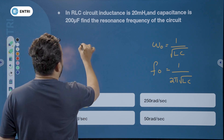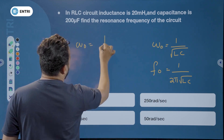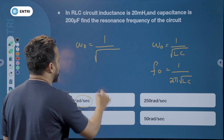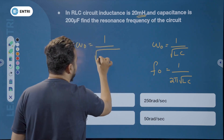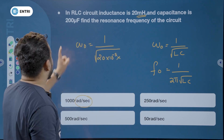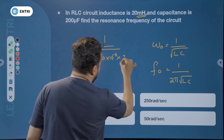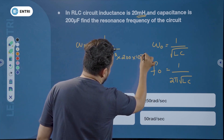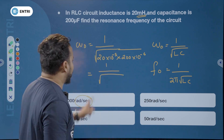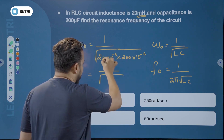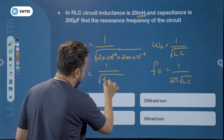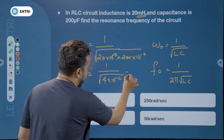We will get omega naught equal to 1 divided by root of L times C. Inductance is 20 milli henry, that is 20 into 10 raise to minus 3. Capacitance is 200 microfarad, that is 200 into 10 raise to minus 6. Simplifying the units, 10 raise to 3 terms cancel, giving 4 into 10 raise to minus 6.